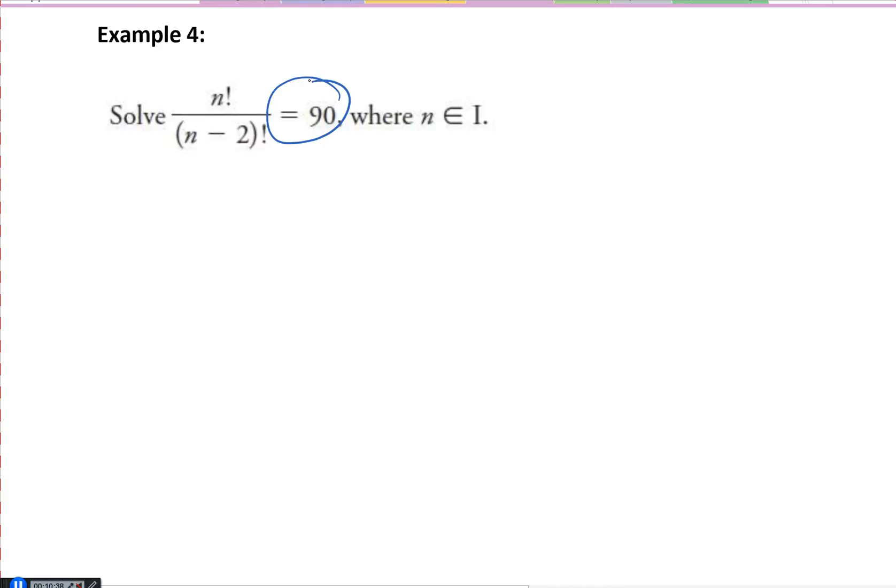So not only are you simplifying the factorials, but you need to simplify it to a point where now you can solve for that n. What is that n actually equal to? In this case, they're saying that n belongs to the integers. So positive and negative values and zero.